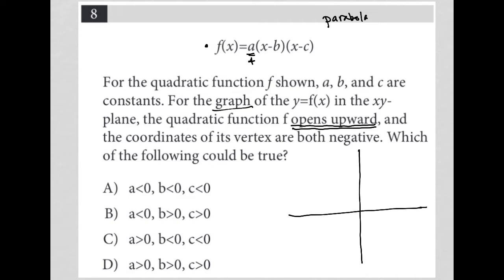So our quadratic function f opens upward and the coordinates of its vertex are both negative, which means in order for the coordinates of the vertex to both be negative, it has to be down here in the left-hand corner in quadrant three.